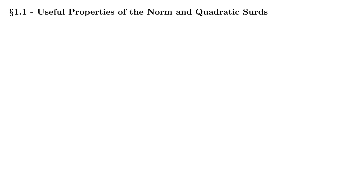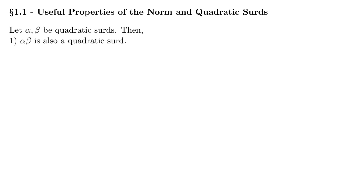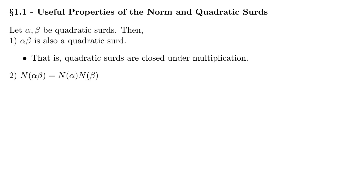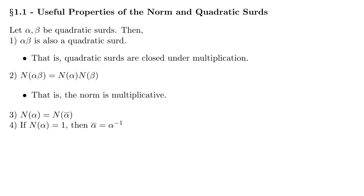Now for some useful properties. Let alpha and beta be quadratic surds. Property 1: alpha times beta is also a quadratic surd — quadratic surds are closed under multiplication. Property 2: the norm of alpha times beta equals the norm of alpha times the norm of beta — the norm is multiplicative. Property 3: the norm of a quadratic surd equals the norm of its conjugate. Property 4: if the norm of alpha equals 1, then the conjugate of alpha equals the inverse of alpha, or 1 over alpha.